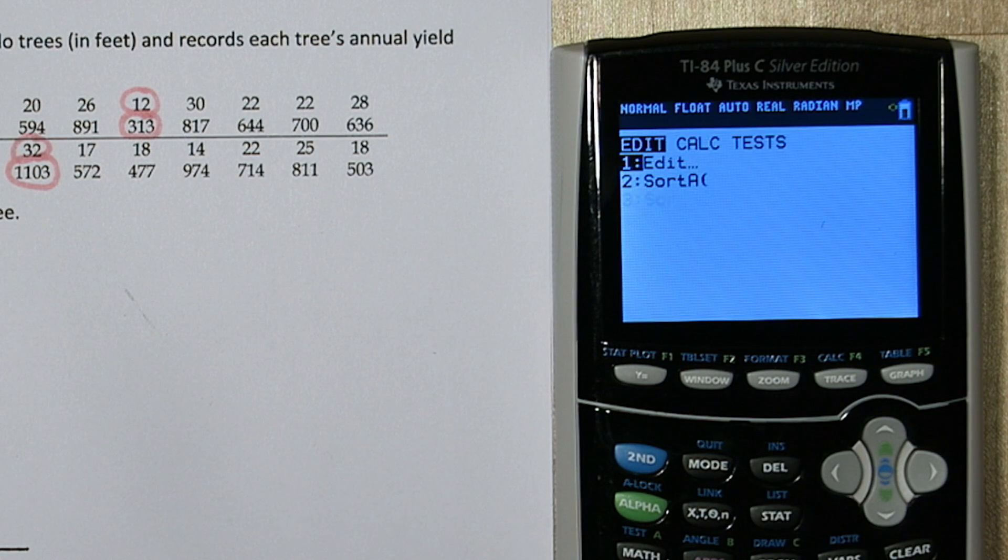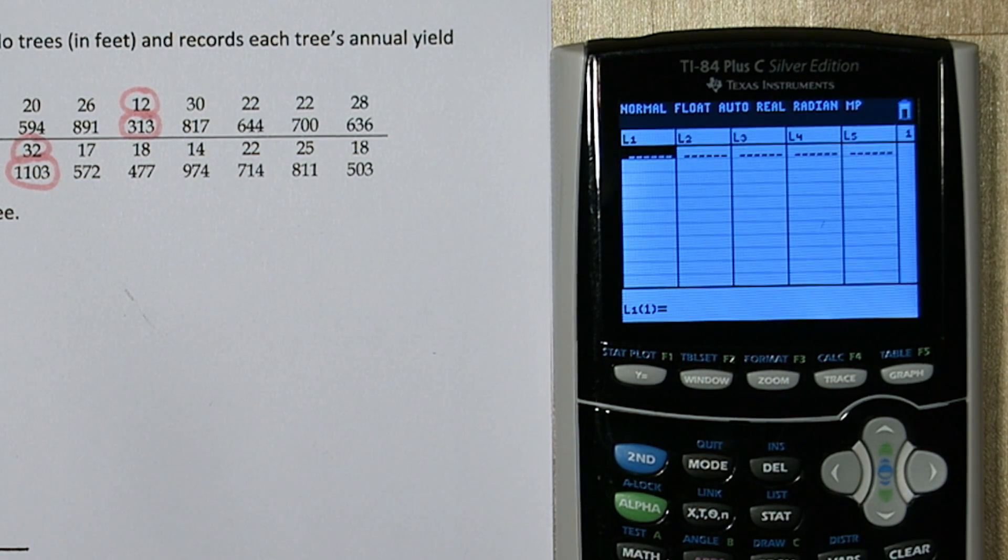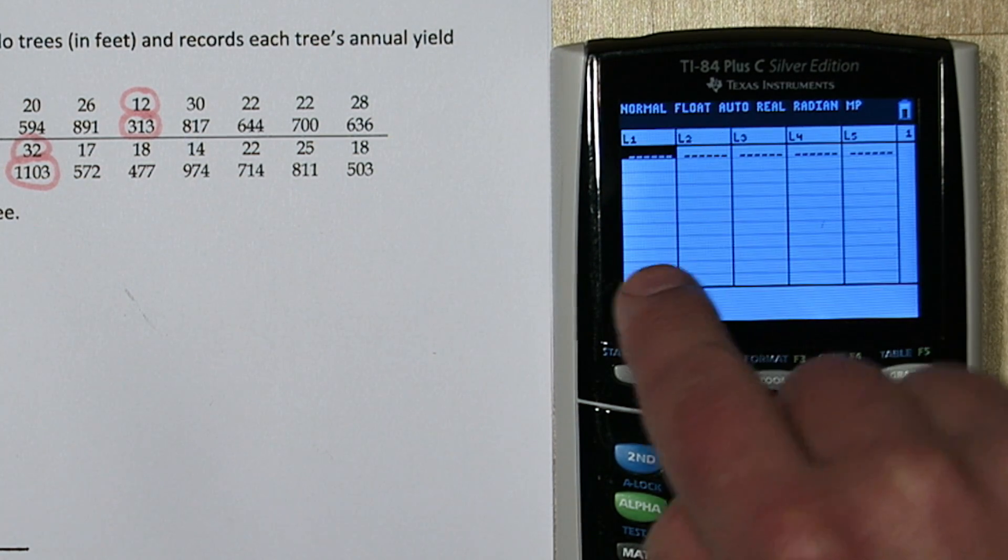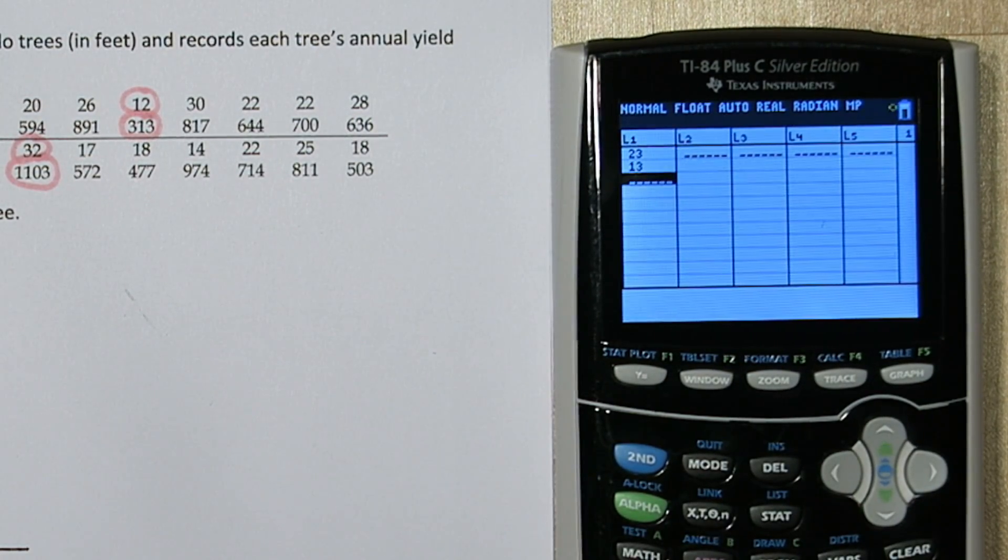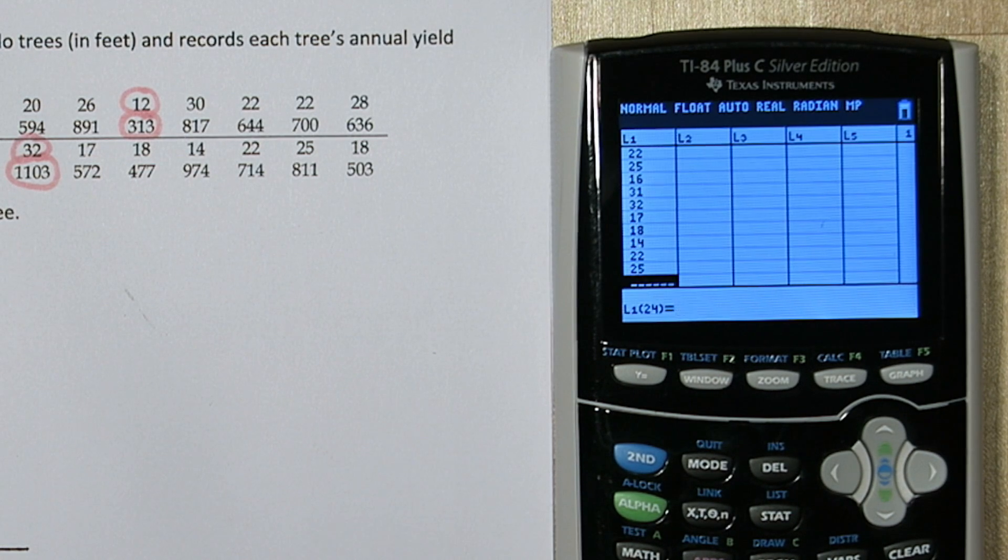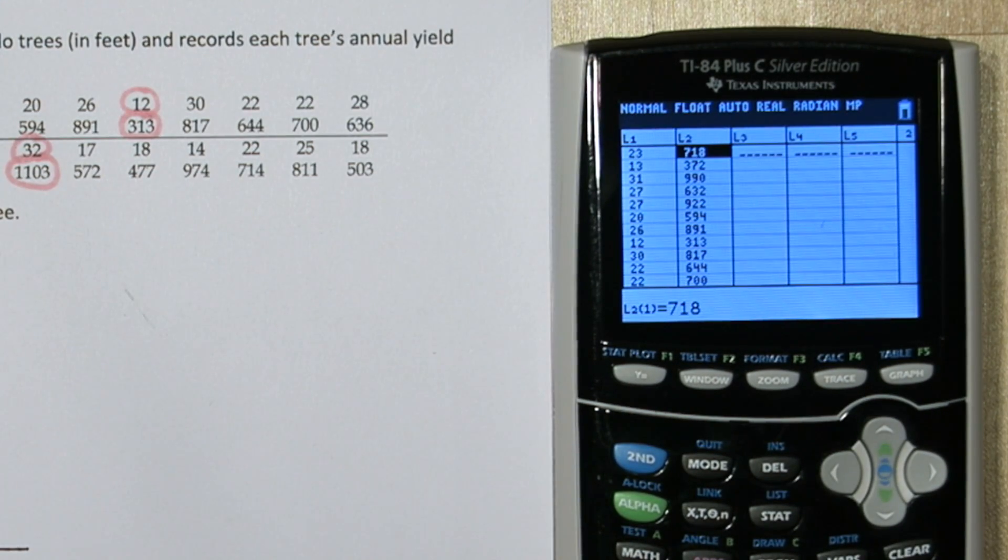If you press STAT and then ENTER, these are your lists, and in list 1 we're going to type all the tree heights, and in list 2 we're going to type all the avocado yields. All right, now that you have the data input.